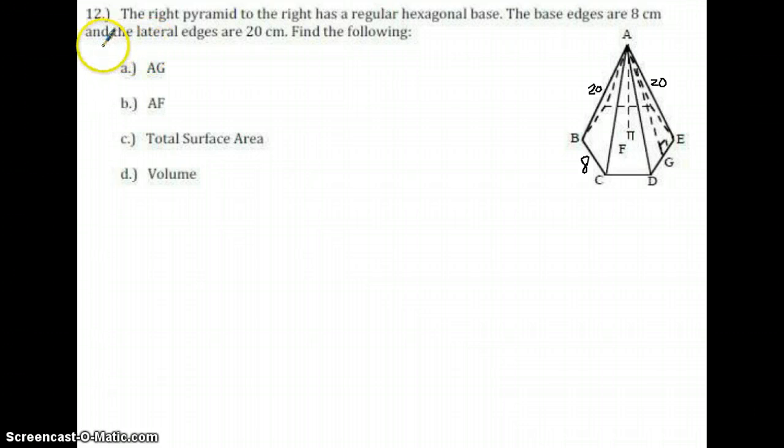Alright, so we have the edges down here, regular hexagon. They're all eight. The lateral edges, which are not extremely helpful directly for either the volume or the surface area, are 20. And I'm supposed to find things like A to G. Well, that looks a lot like slant height.